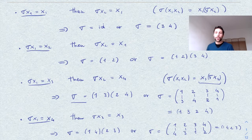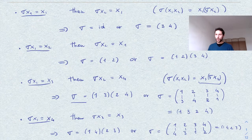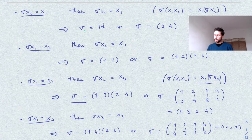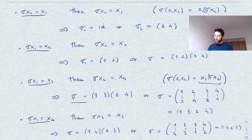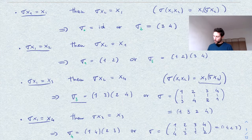What about the parity and the order of these elements? Let's compute, for each sigma, the parity and order. I will call sigma_0 the identity, sigma_1 the cycle (1 2), sigma_2 the cycle (3 4), sigma_3 the product (1 3)(2 4), sigma_5 is a product of two cycles, and the two longer cycles I call sigma_6 and sigma_7. We have now numbered all 8 elements of F.